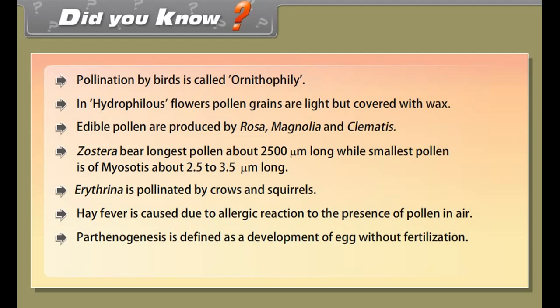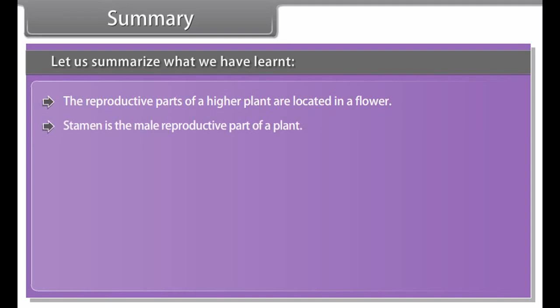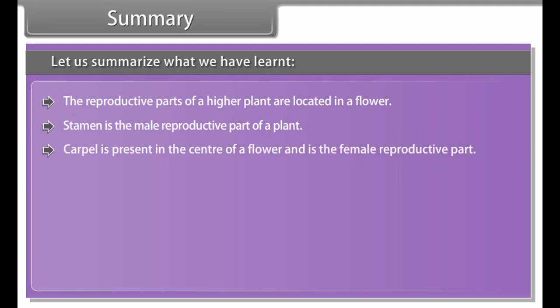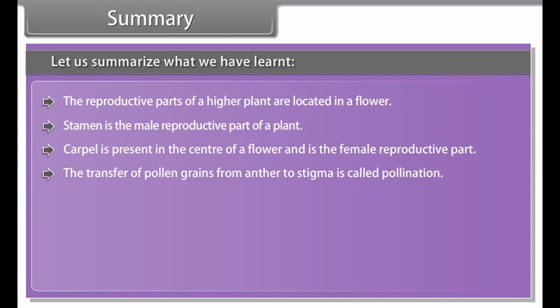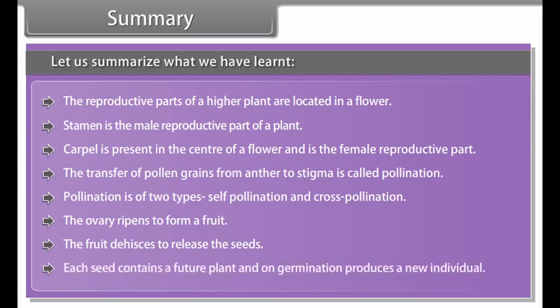Singamy: one male gamete fuses with the egg to form a diploid zygote — this is called singamy. Triple fusion: the second male gamete fuses with the secondary nucleus to form the primary endosperm nucleus; this is called triple fusion because three nuclei are involved — one male gamete and two polar nuclei. Double fertilization: the process where fertilization occurs twice in the same embryo sac by two male gametes — singamy and triple fusion together — is called double fertilization.